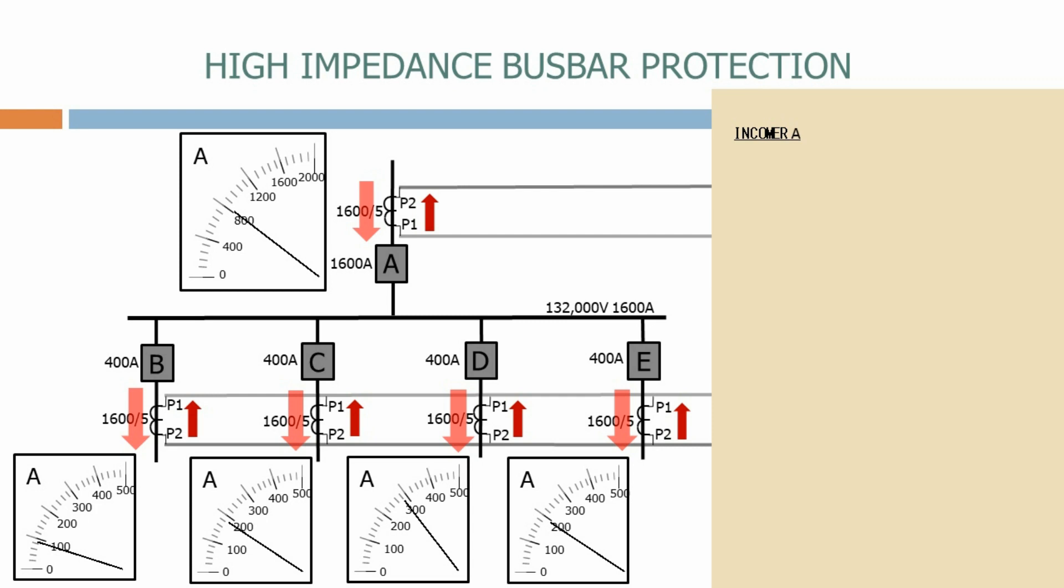On incomer A we can see that the primary current is 800 amps. The CT ratio is 1600 to 5. Therefore the secondary current is the inverse of the CT ratio which is 5 divided by 1600 multiplied by the primary current of 800 amps, equals 2.5 amps on the secondary.